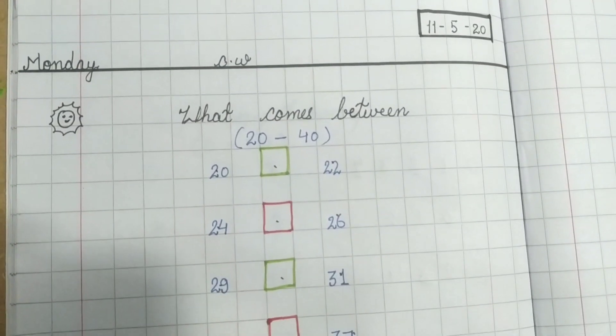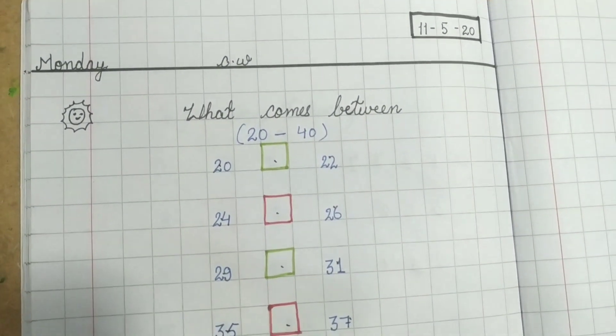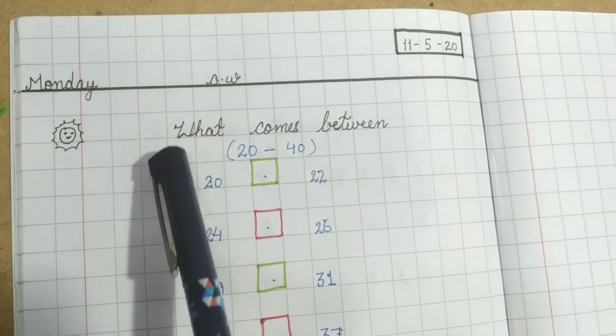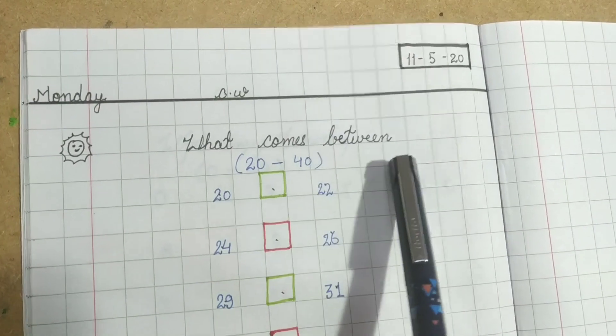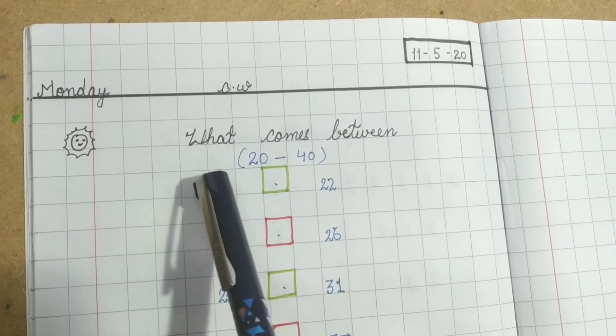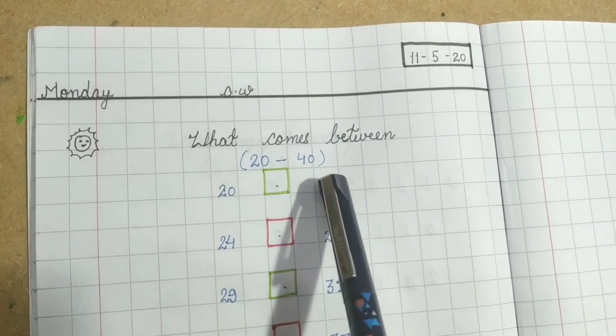Now after that, you have to write 'what comes in between.' Your parents can write this for you. We are going to do numbers from 20 to 40.